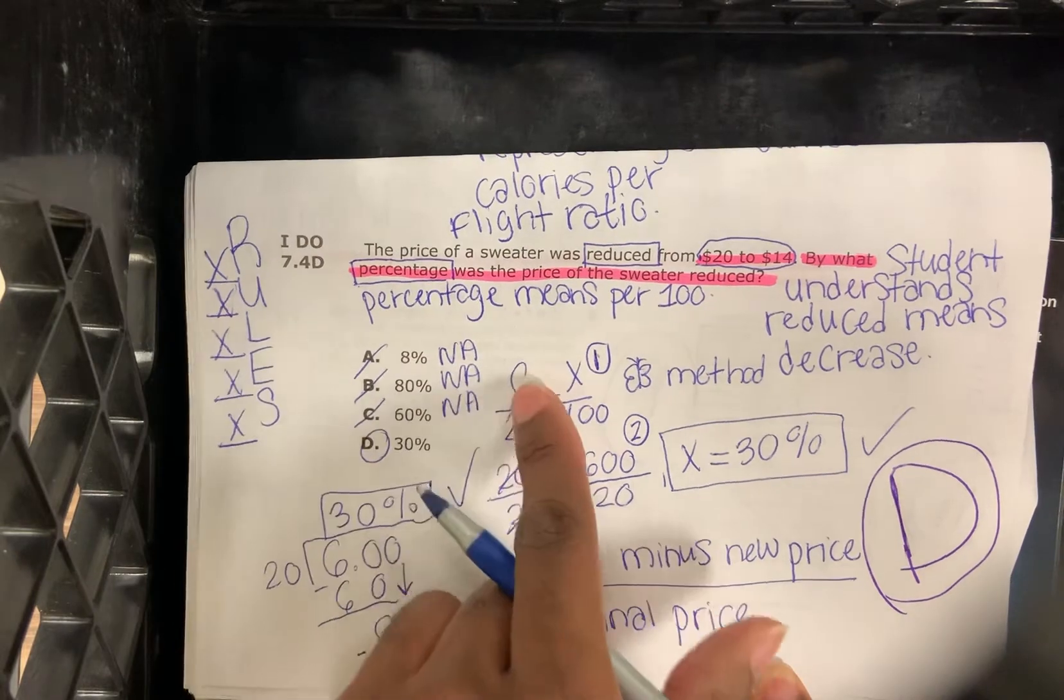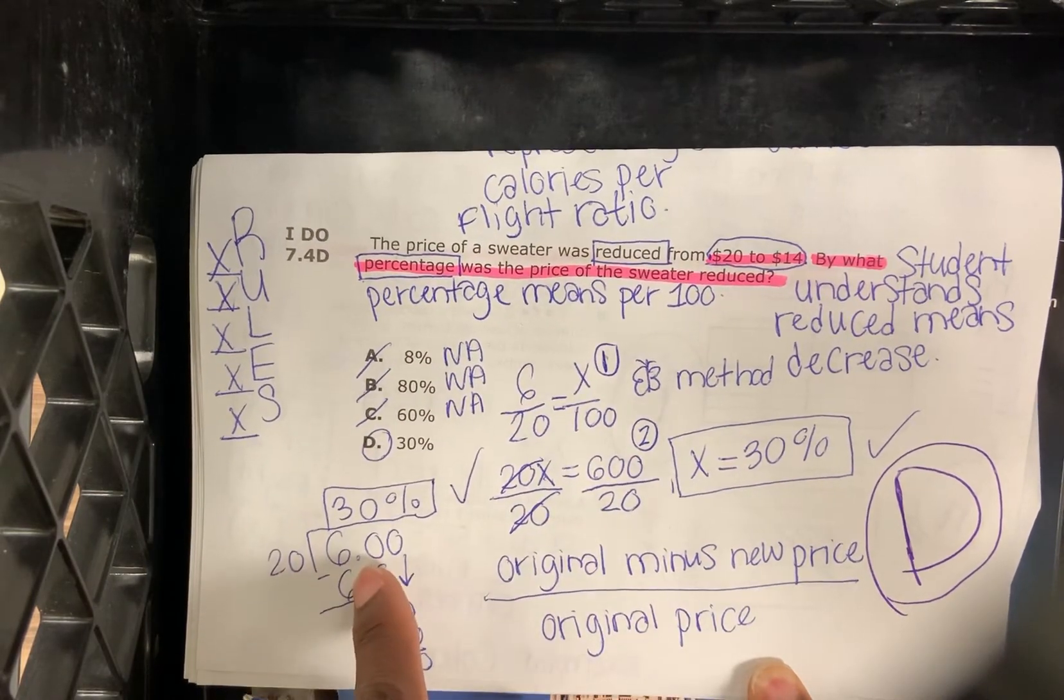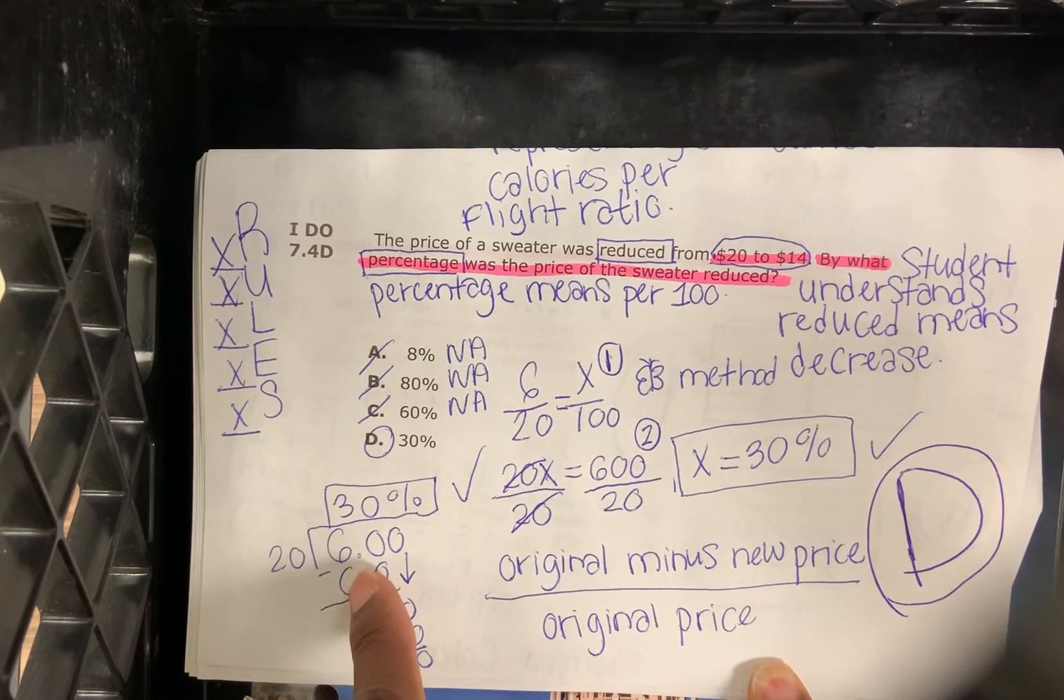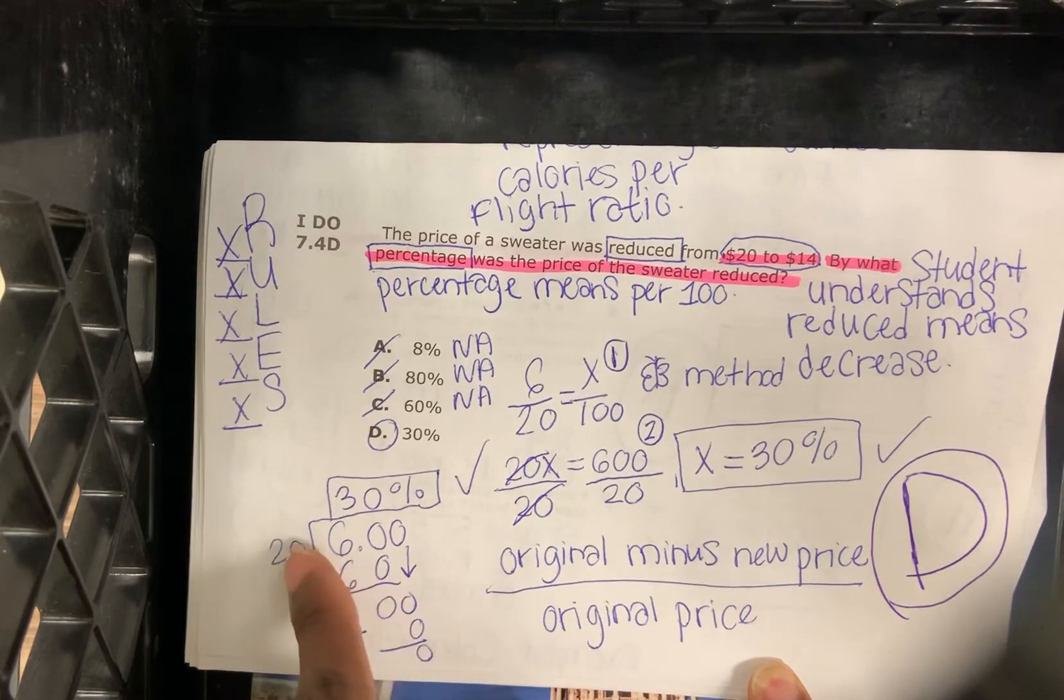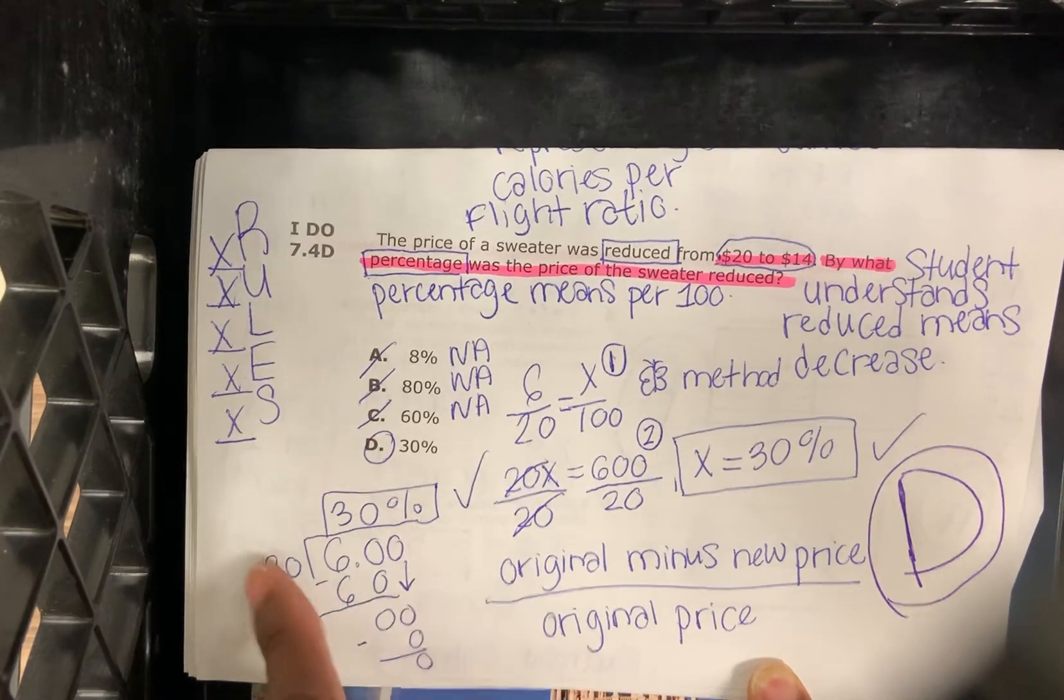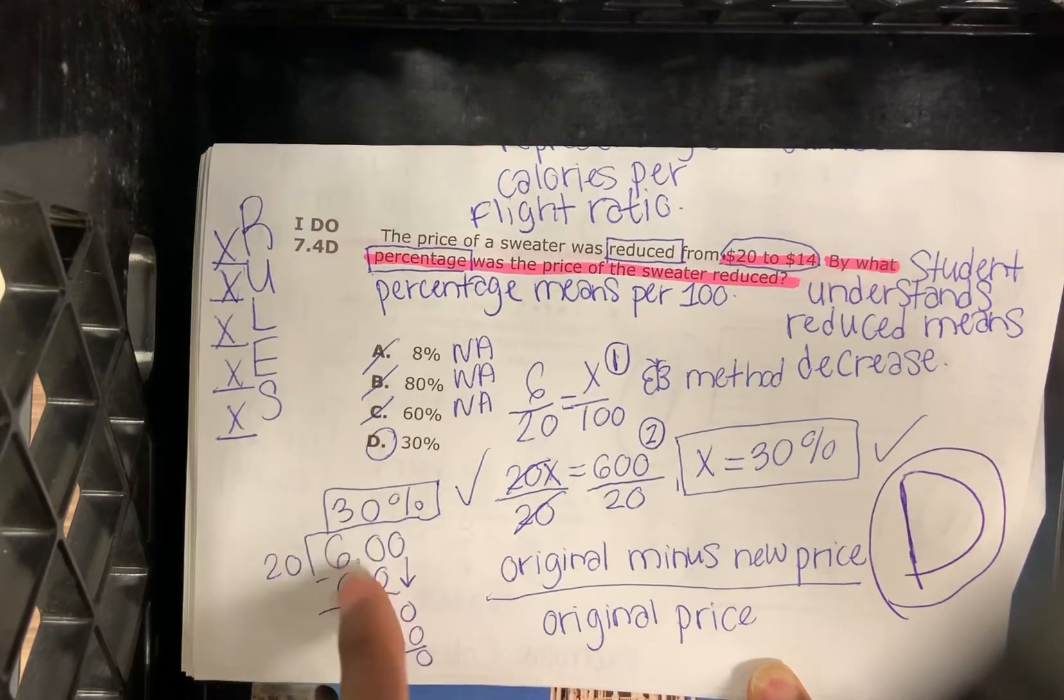Another way we could check this out is 6 divided by 20. Add the decimal place. 20 goes into 6, 0 times. But 20 goes into 60, 3 times. 60 minus 60 is 0. Bring down the 0. 20 goes into 0, 0 times, 30%.